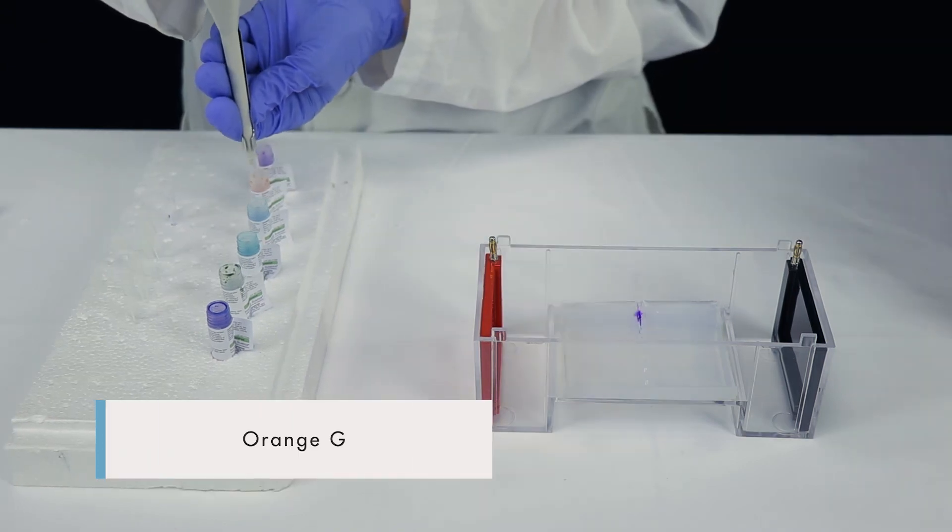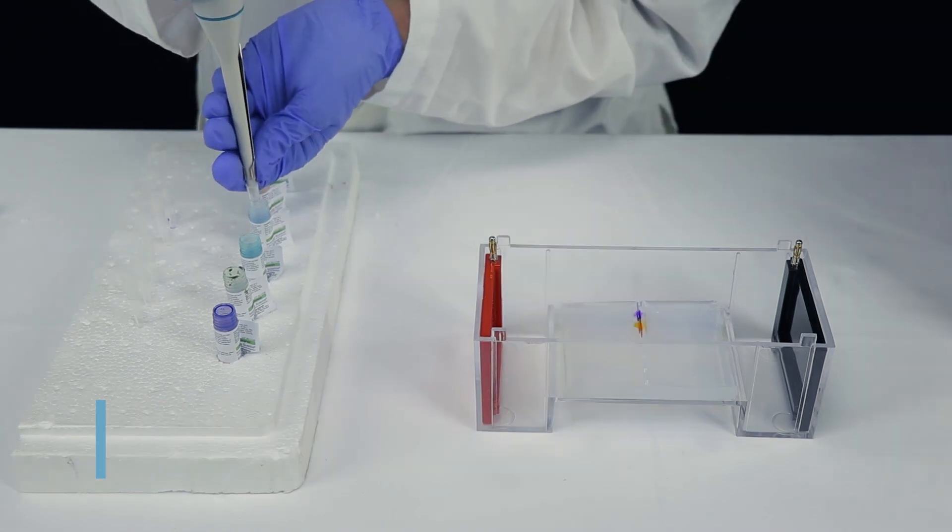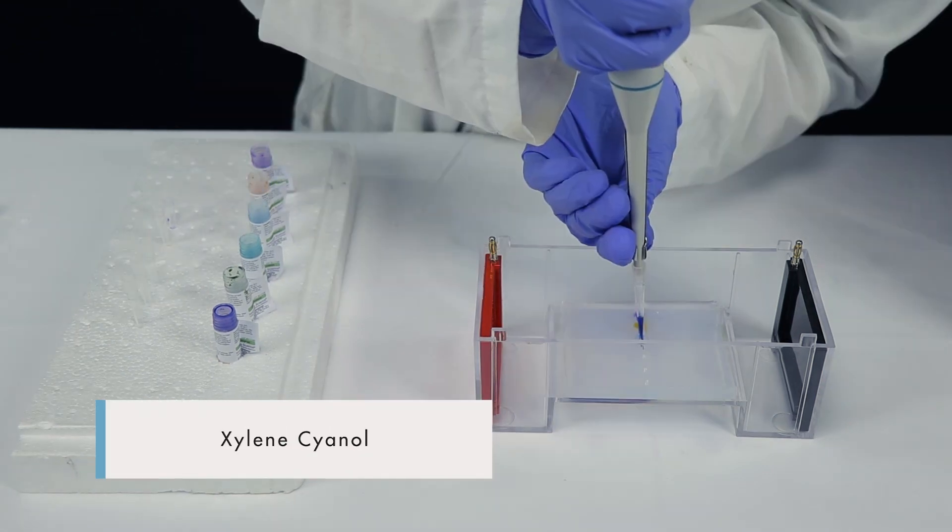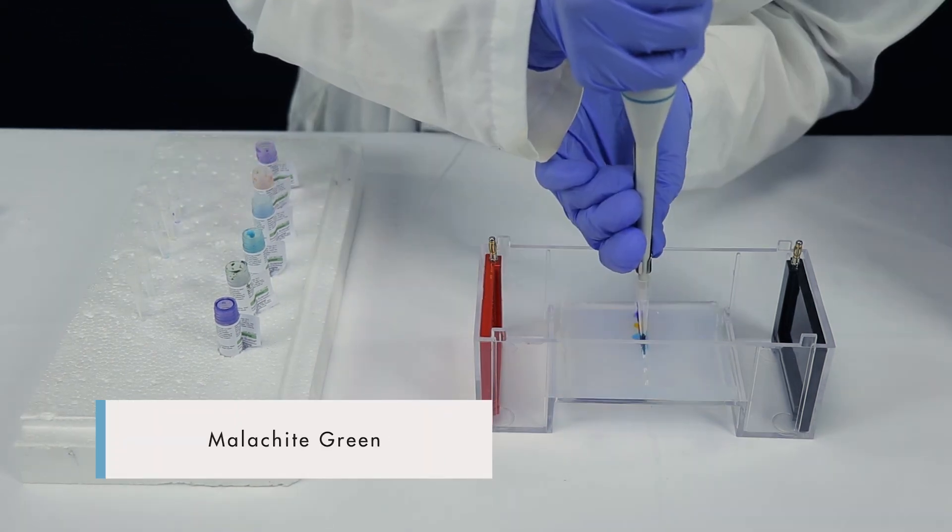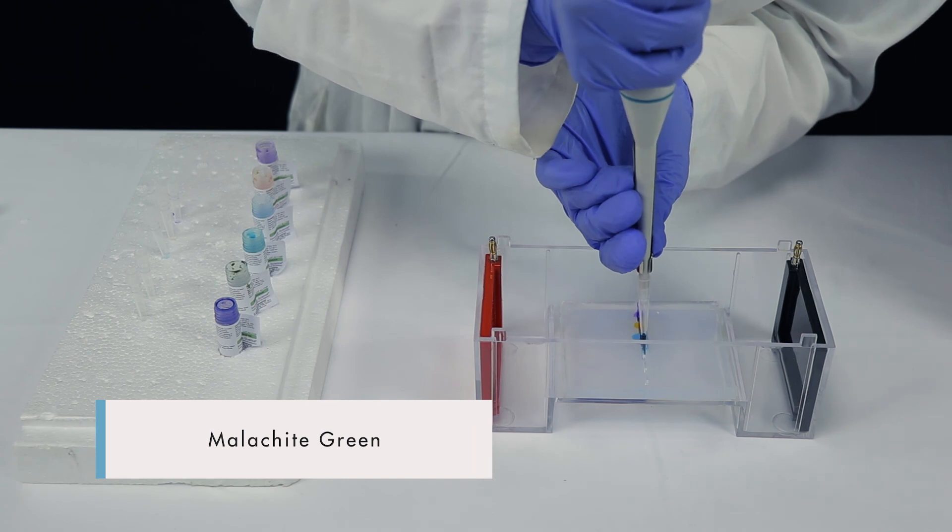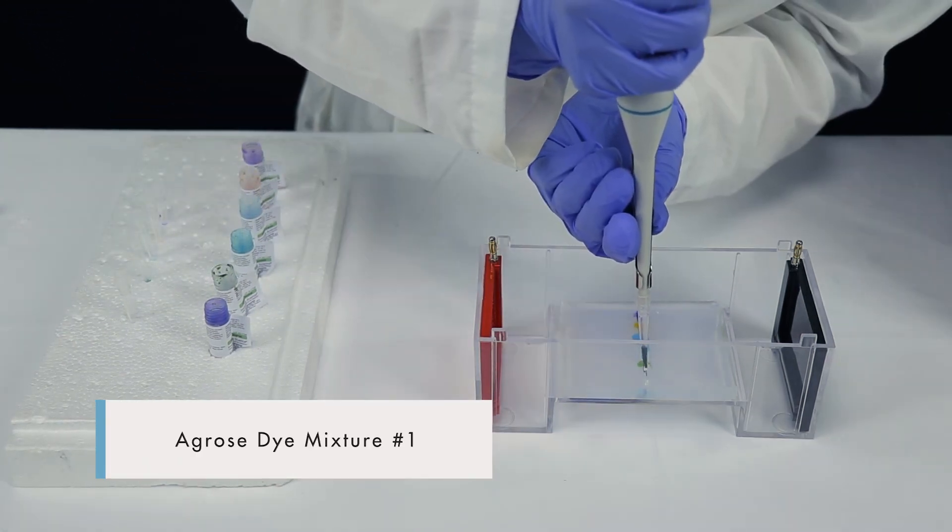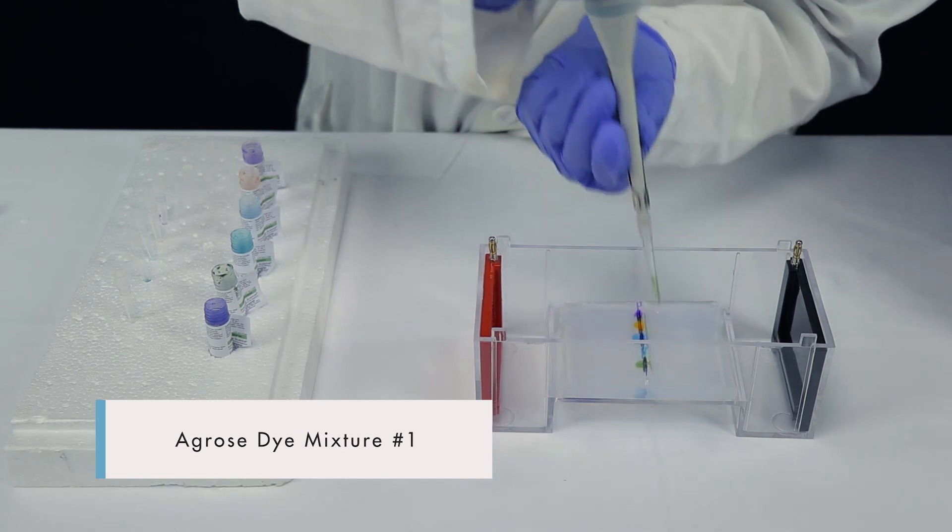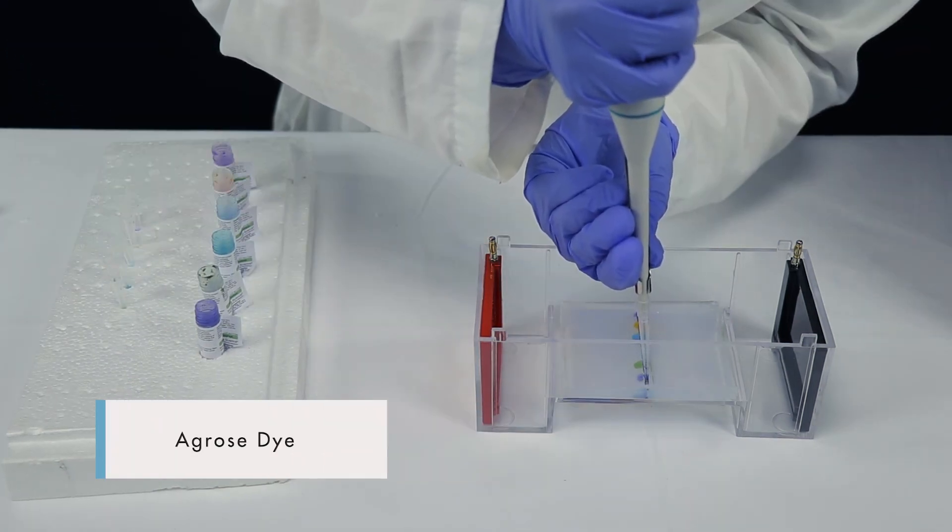These dyes are of different molecular sizes and carry different charges. Because of this, we'll load the dyes into wells positioned in the middle of the gel. Some of the dyes will be attracted to the negative electrode and others will move toward the positive electrode. However, if you're separating DNA, always position the wells at one end of the gel. Record which dye was placed into each well so you can compare your results later.